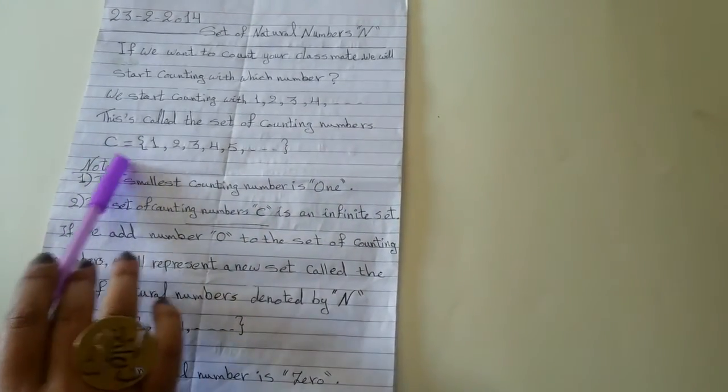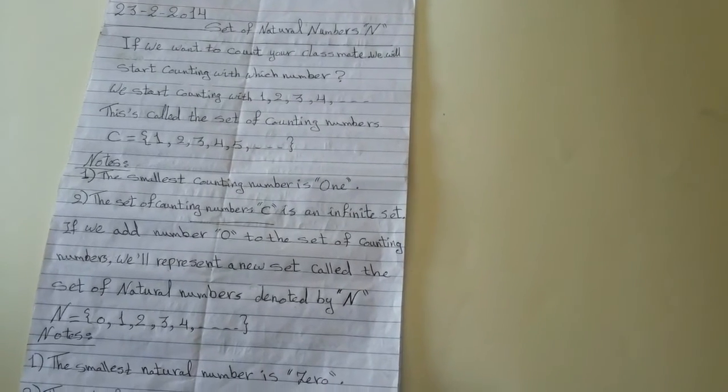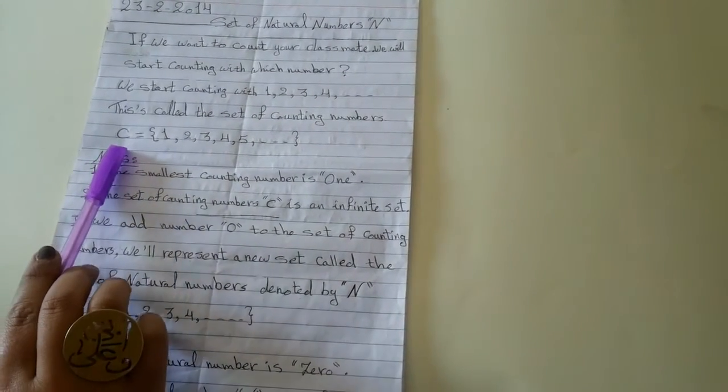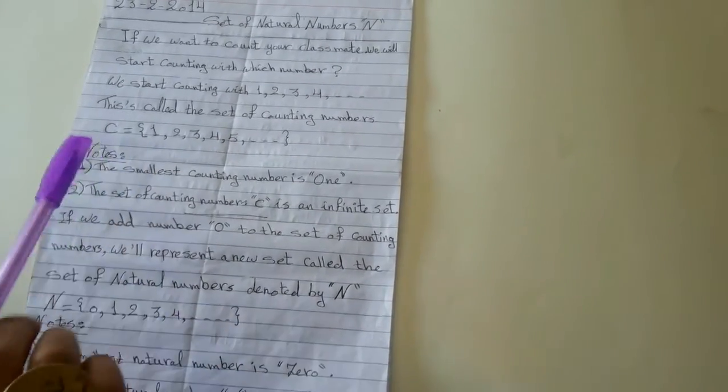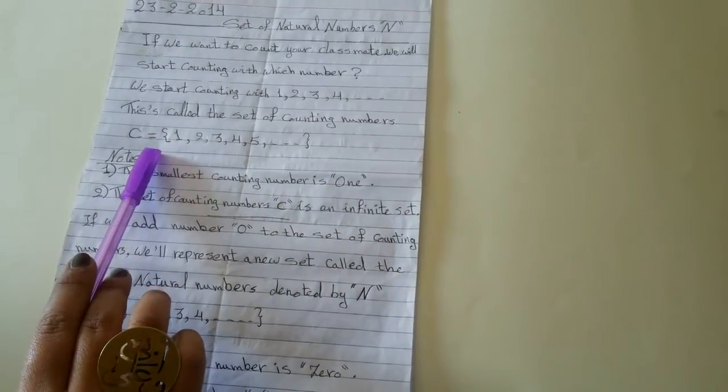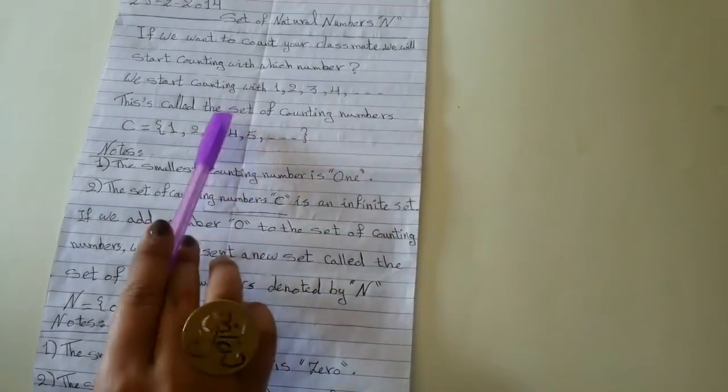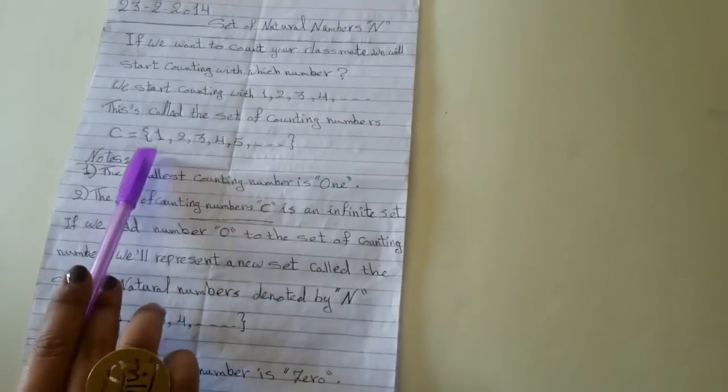This is called the set of counting numbers. We denote it by letter C. As we know from the first term, the name of the set should be a capital letter.